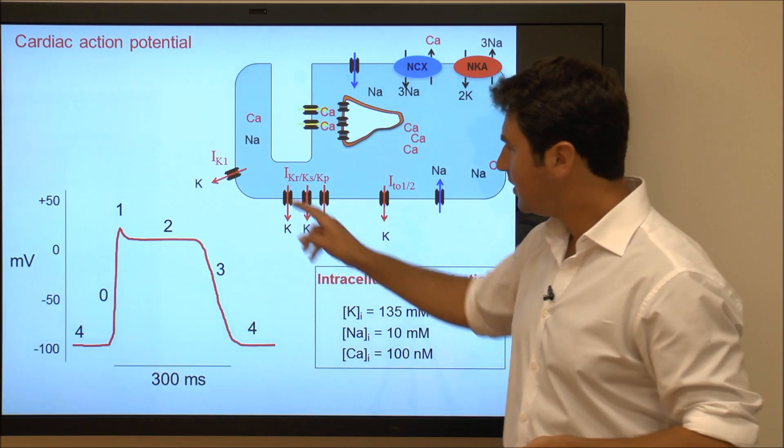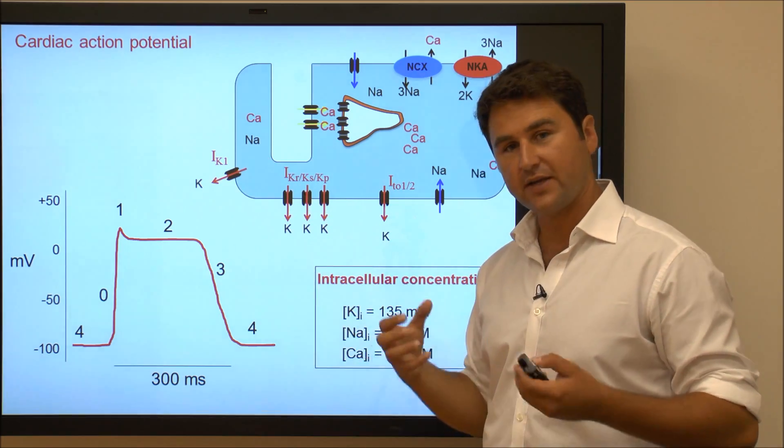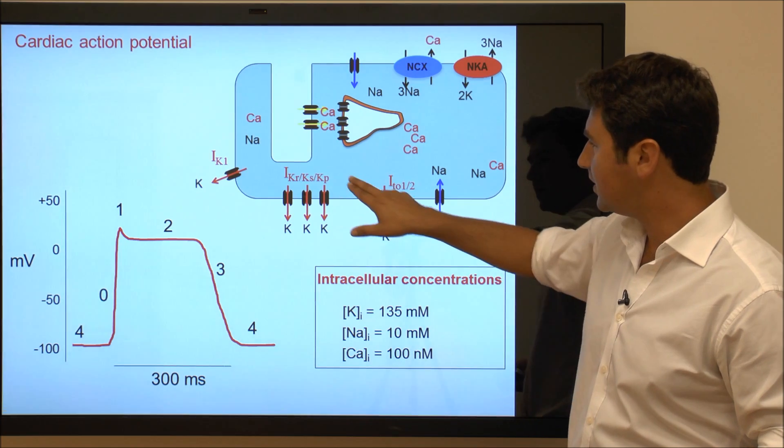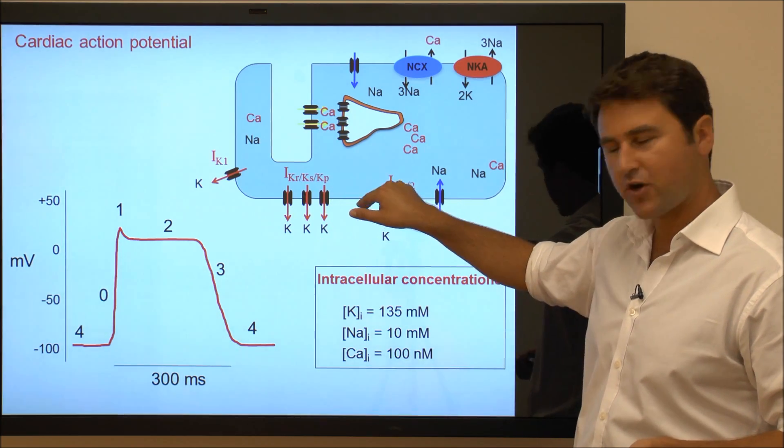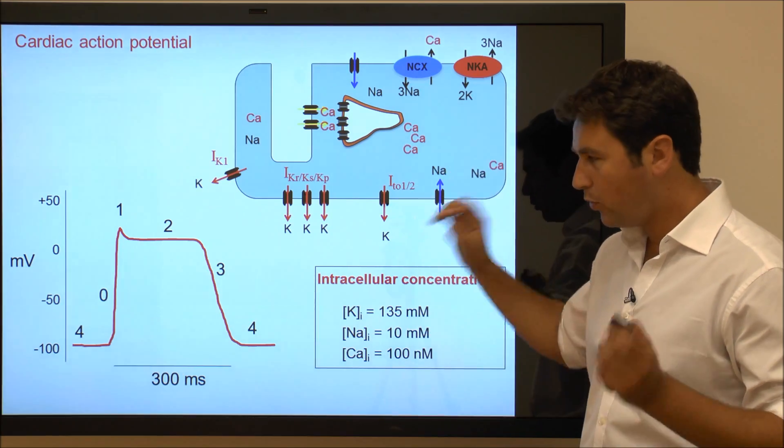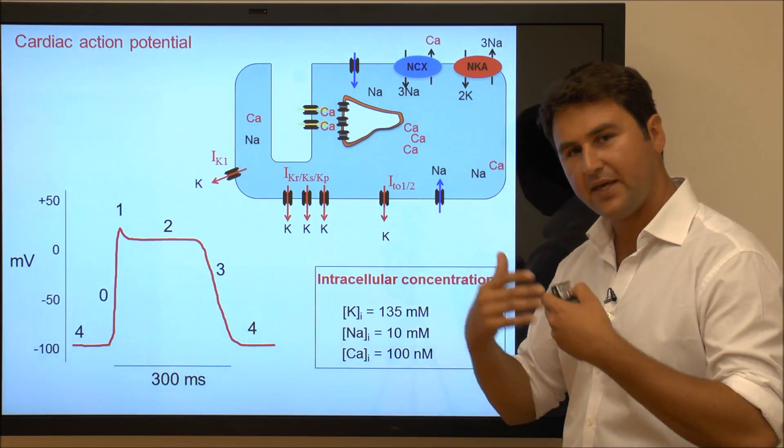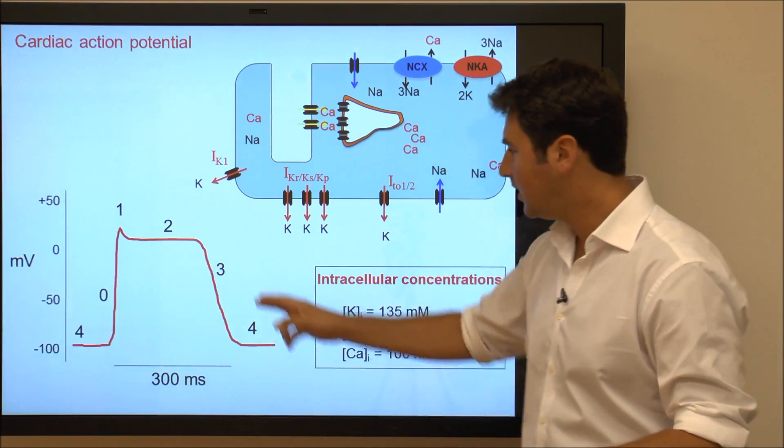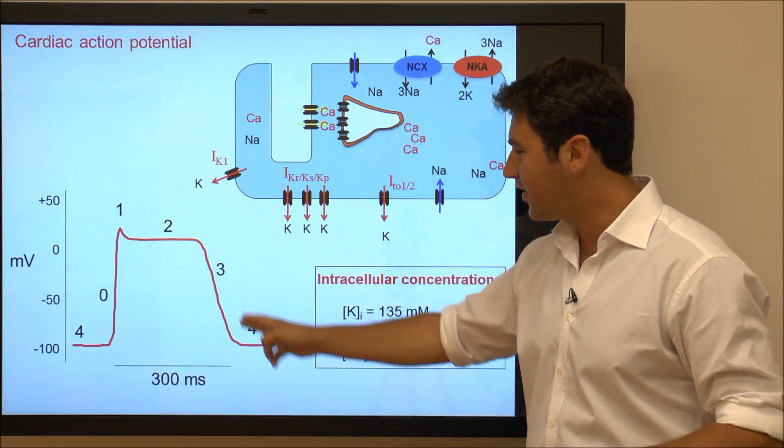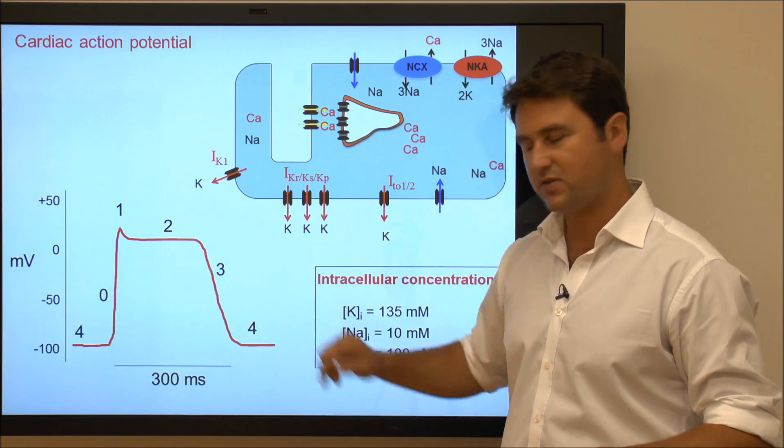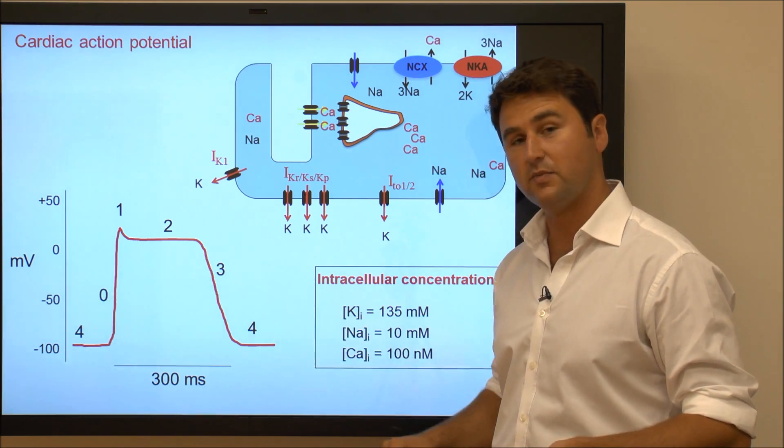Then in phase 3, the IK1 channel again switches on, and you've still got all the IKR, IKS, and IKP channels switched on, as well as IK slow, which are all potassium channels making potassium leave the cell. So making all these positive charges leave the cell and therefore resulting in a very steep decline in membrane potential towards minus 70 millivolts, towards minus 90 millivolts.